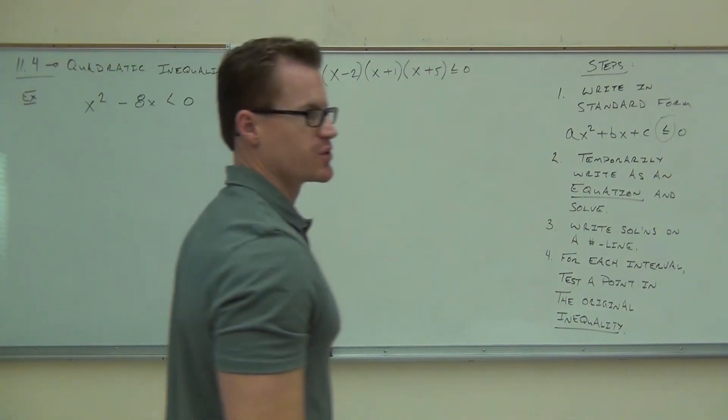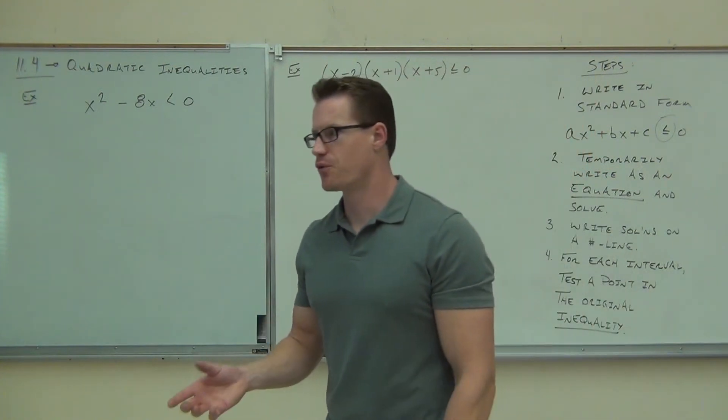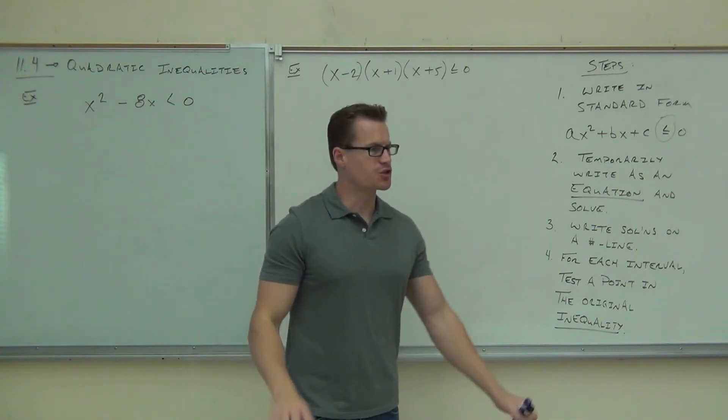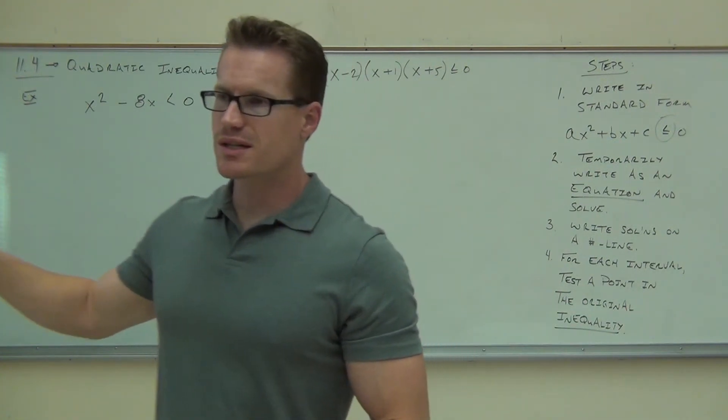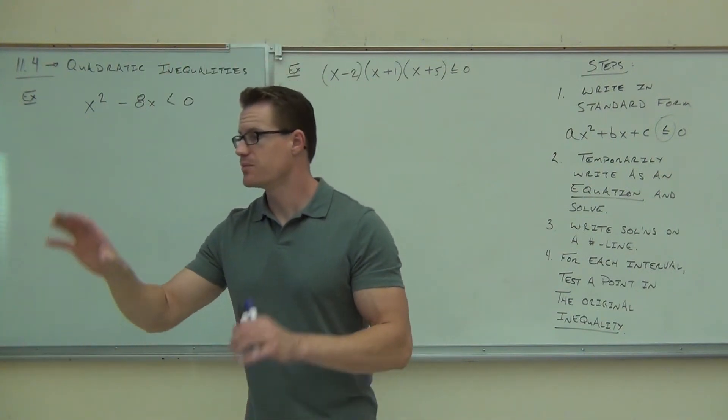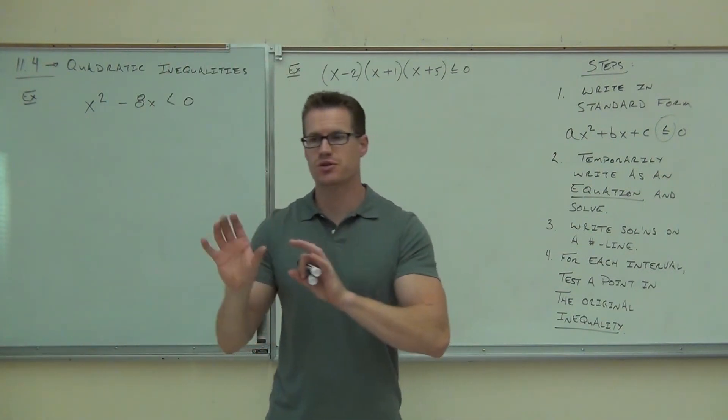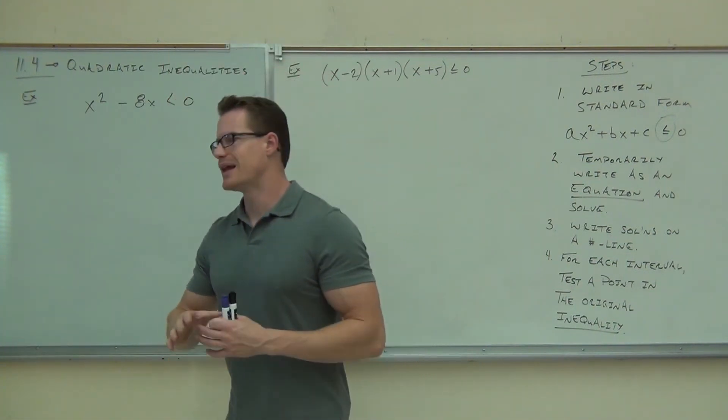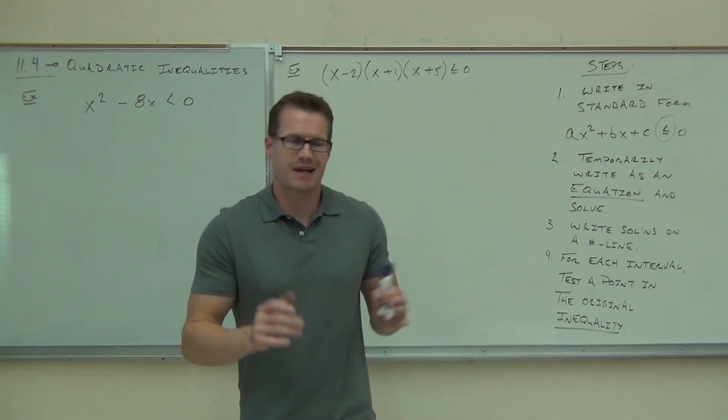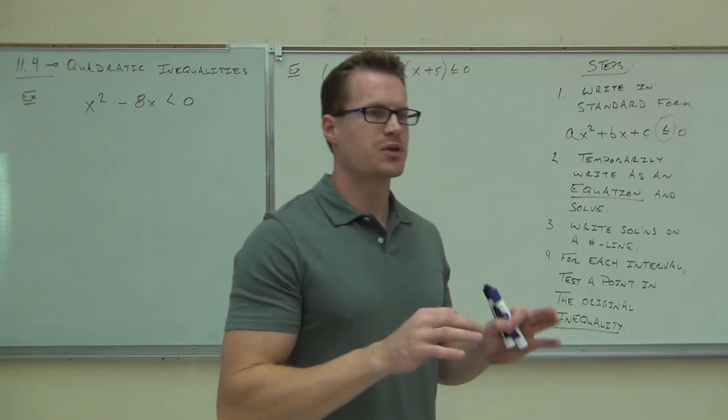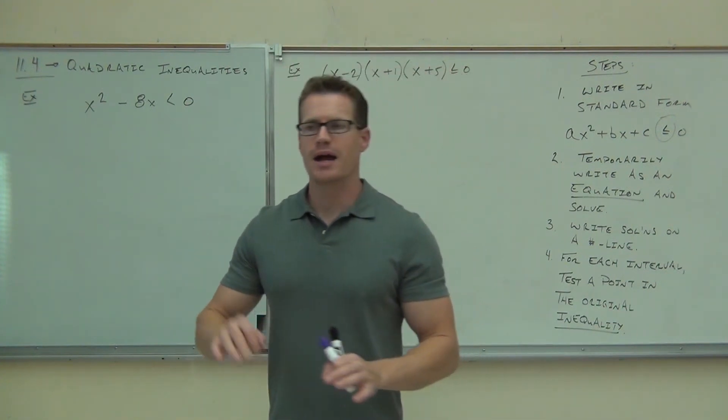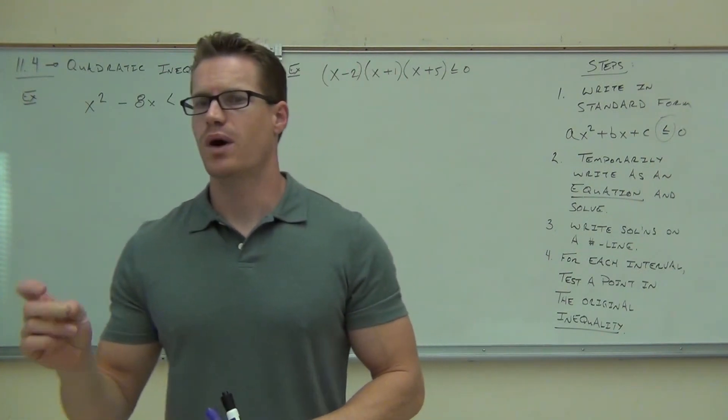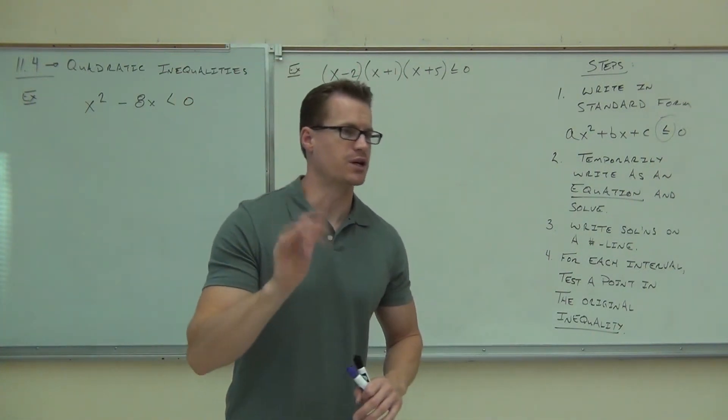So it's still quadratic because we still have the x squared. That means you still need it in standard form. All standard form means for you is you're getting everything to one side and zero on the other side. If it wasn't in standard form, you'd be adding or subtracting to move parts over to make sure you have zero on one side. This is, of course, in standard form. That's great. You temporarily set it equal to zero. What that's allowing you to do is to find those breaks for those intervals.